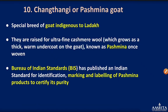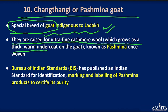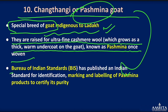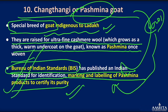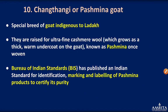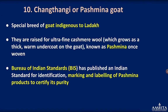Next is Chang Tangi, also known as the Pashmina Goat. It is a breed of goat indigenous to the Ladakh area — a special breed raised for ultra-fine Kashmir wool, which grows as a thick warm undercoat known as Pashmina. The Bureau of Indian Standards (BIS) has published an Indian standard for identification, marking, and labeling of Pashmina products to certify purity and prevent mislabeling by other producers seeking higher prices.